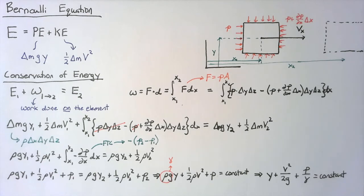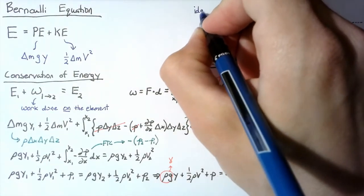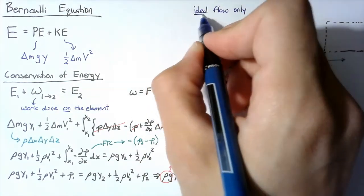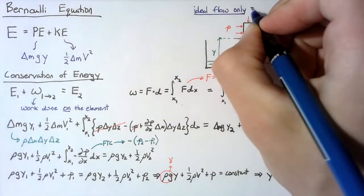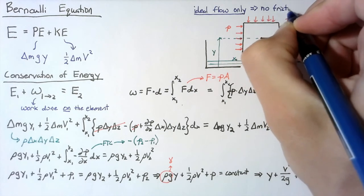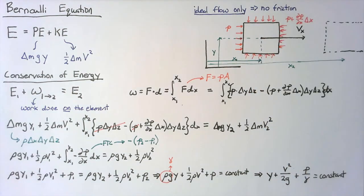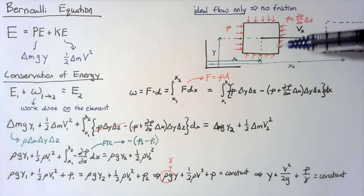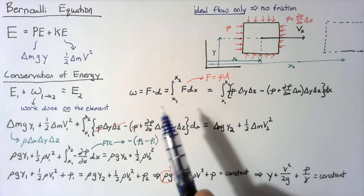Now what I didn't mention before is that this only holds true for ideal flow. And what I mean by that is that there can't be any friction in our flow. Because if there were friction forces on our elements, that would mean that there's an additional force that we didn't account for, and that would do work on our element as well.